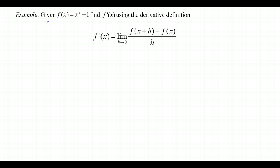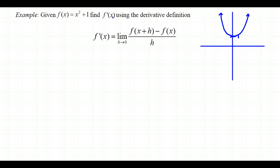Let's look at an example. Given f of x equals x squared plus 1, find f prime of x using the derivative definition. We know x squared plus 1 is a parabola with a y-intercept of 1. What we're trying to find is the slope of the tangent line at any x value — at every single value on the curve. We won't get one number; instead we'll get a function from this limit definition that lets us substitute in any x value to find each corresponding slope.